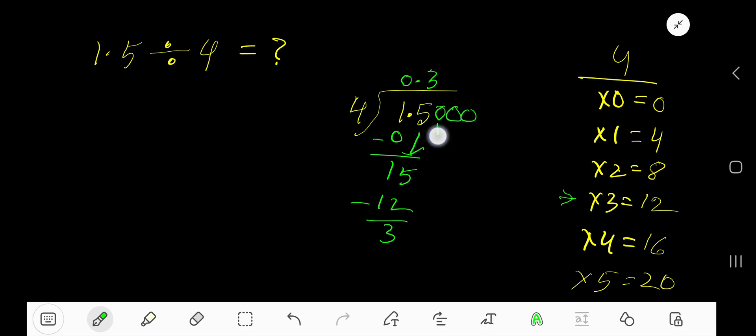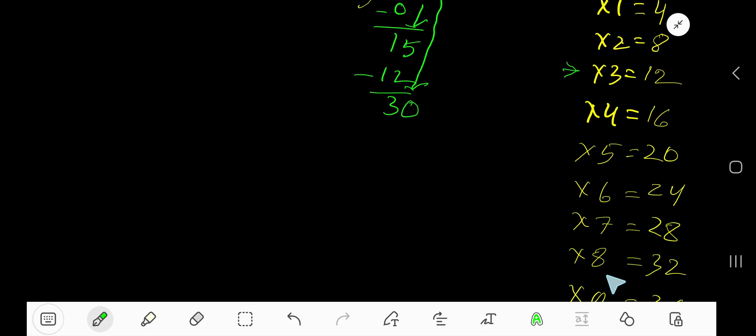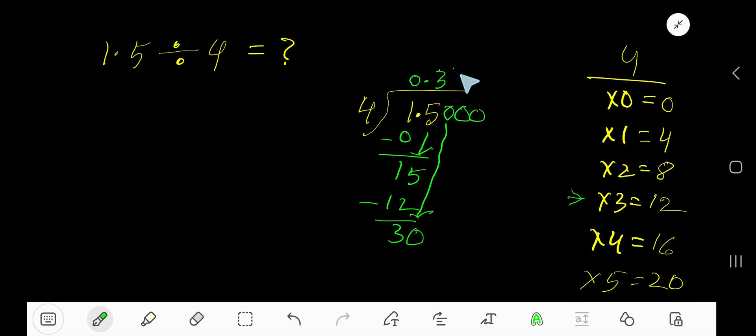4 goes into 30 how many times? 8 times is 32, which is greater than 30, so 7 times. Write 7. 7 times 4 is 28. Subtract.